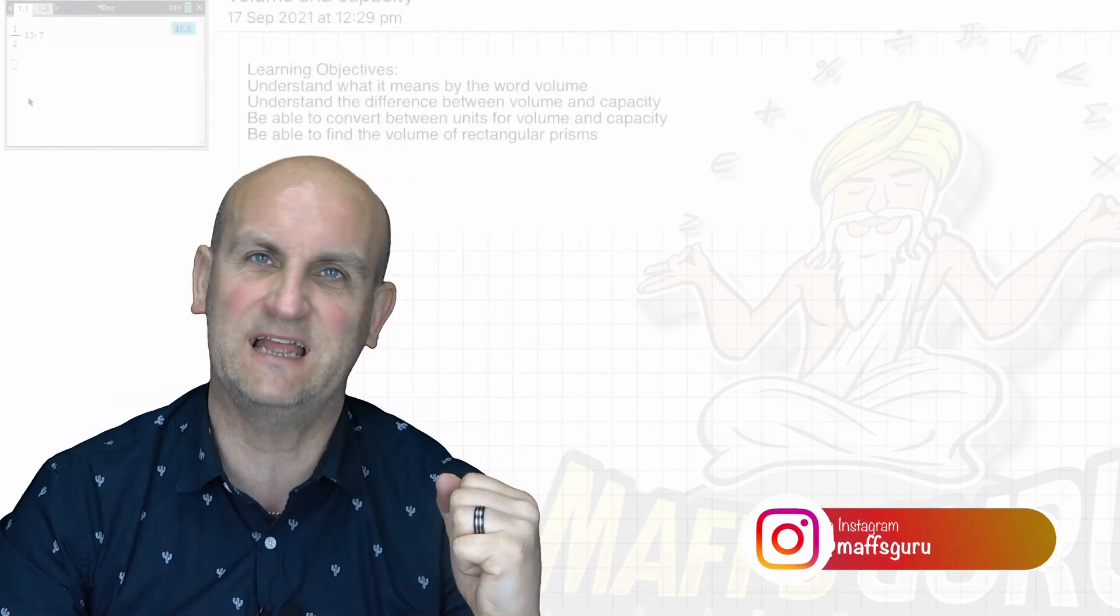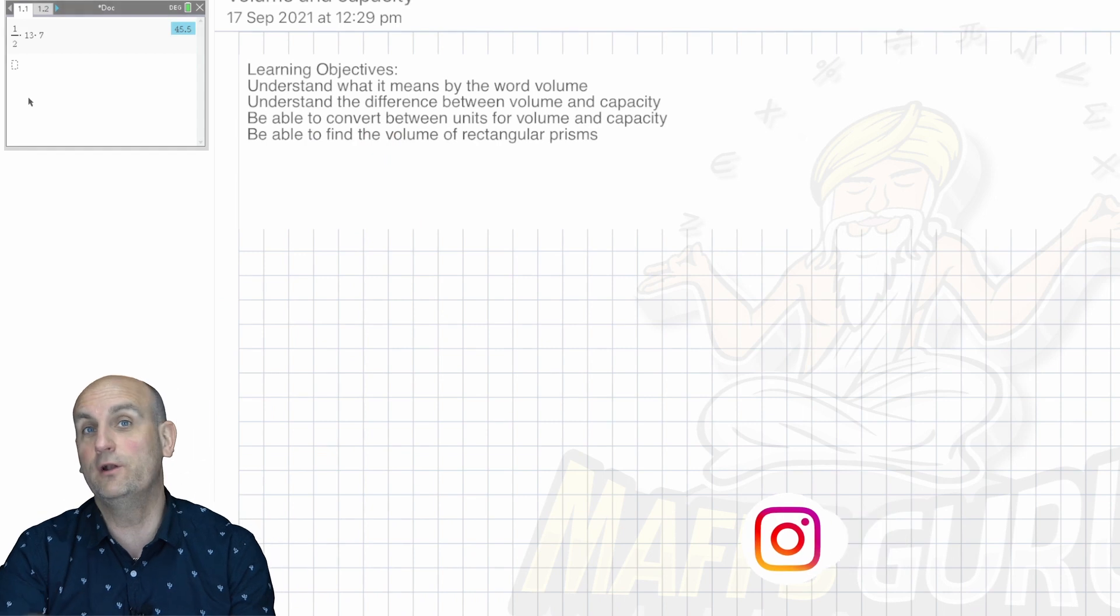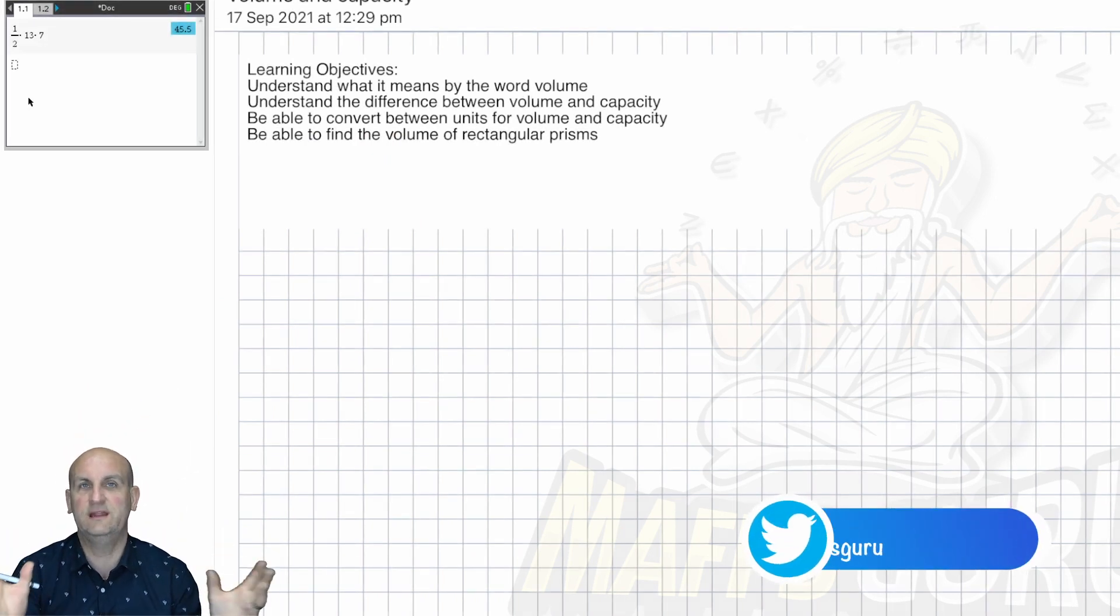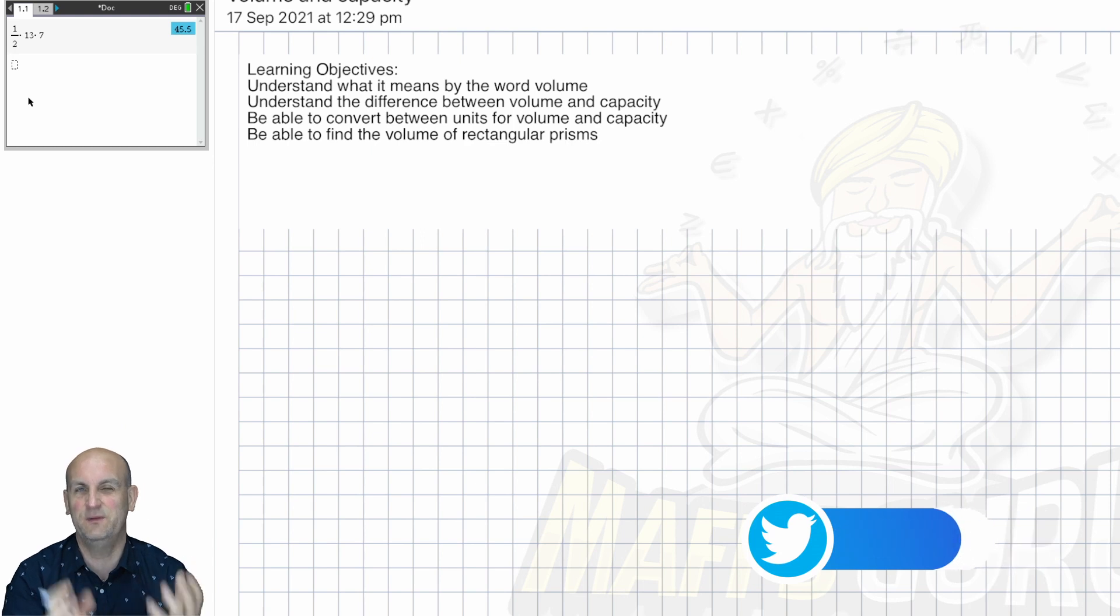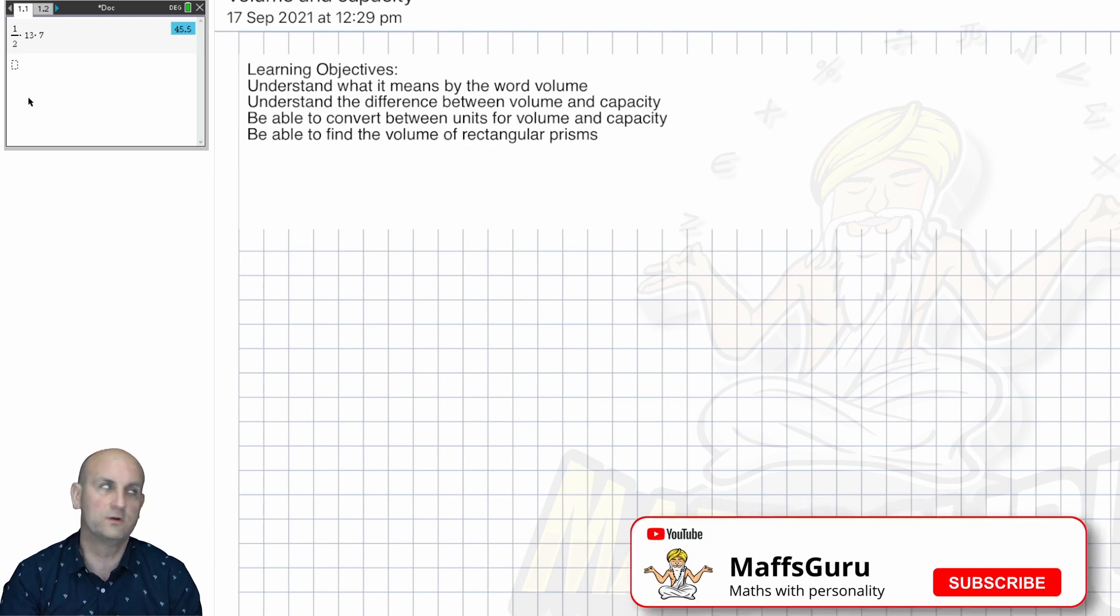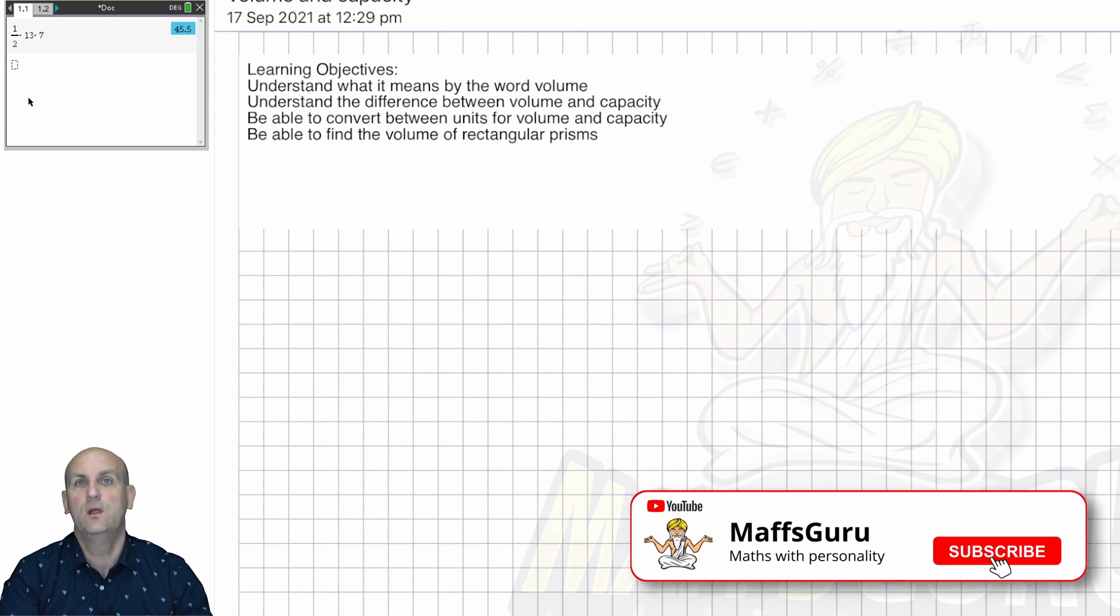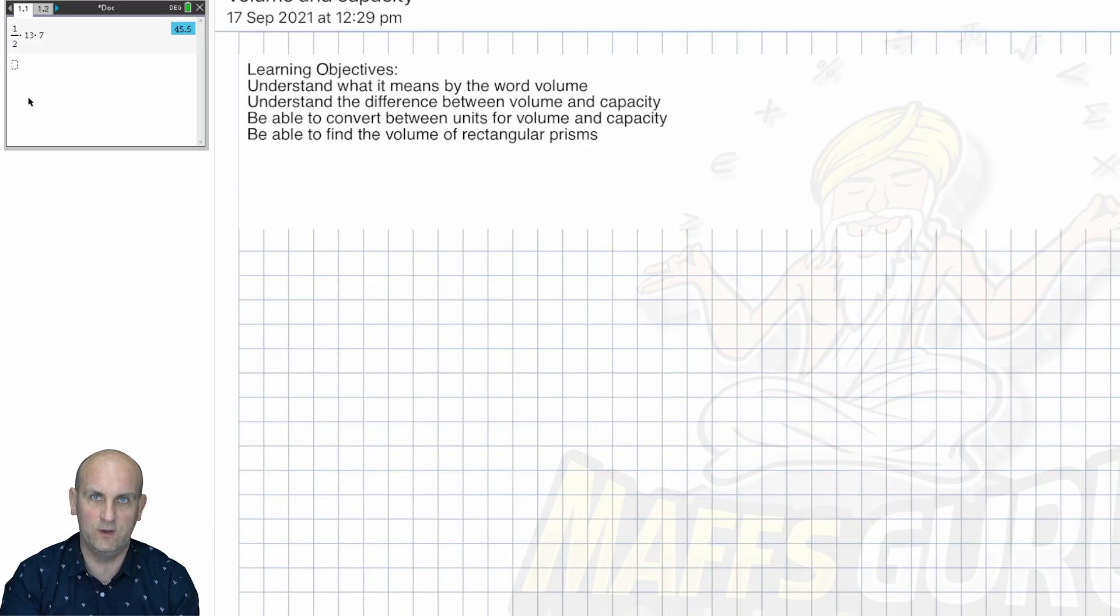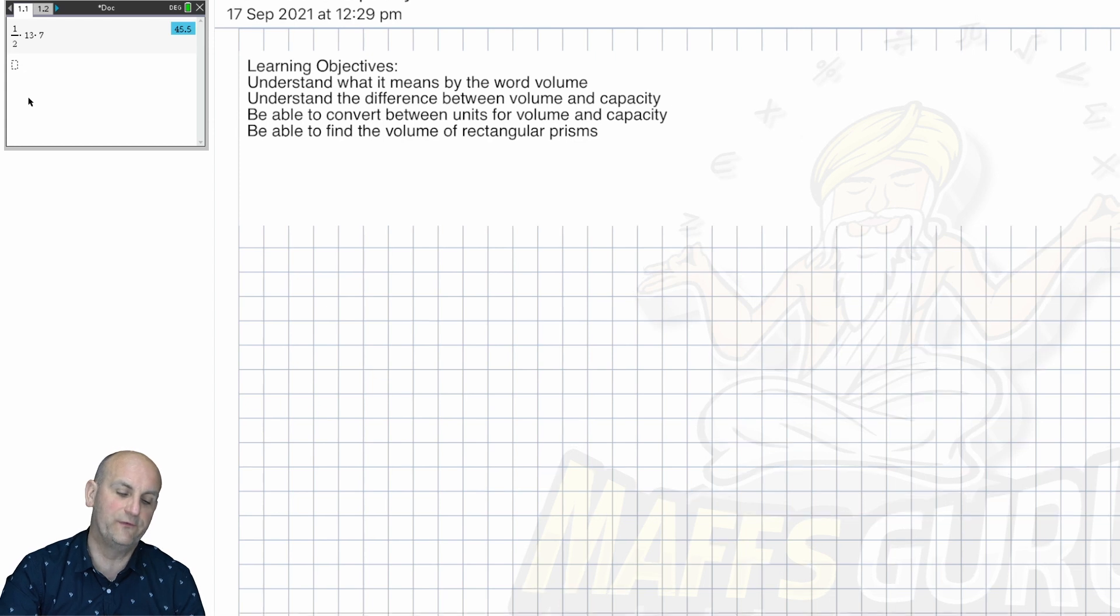Volume and capacity. Believe it or not, they're the same thing. Volume is for everything that's not fluids. Now that seems a bit weird, but generally speaking, when we deal with liquids, water or gases in fact, we deal with things called capacities. Exactly the same working out, just slightly different units.